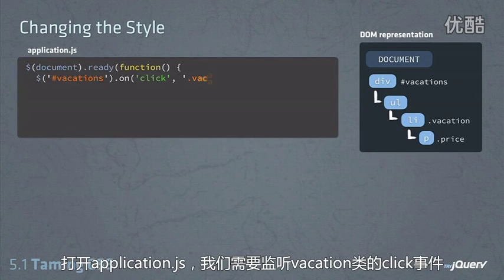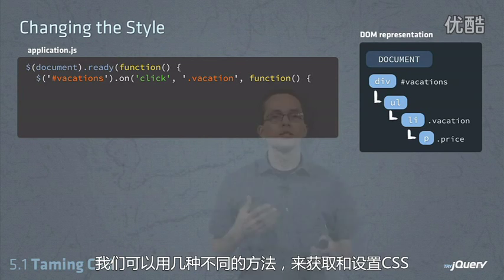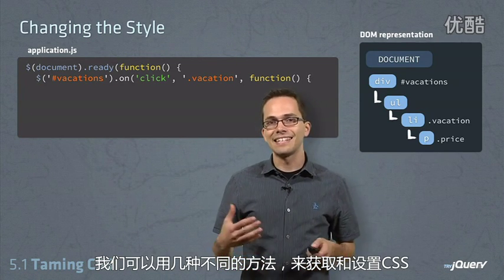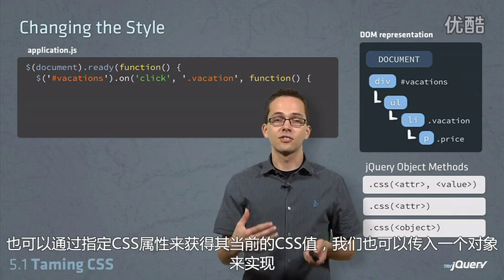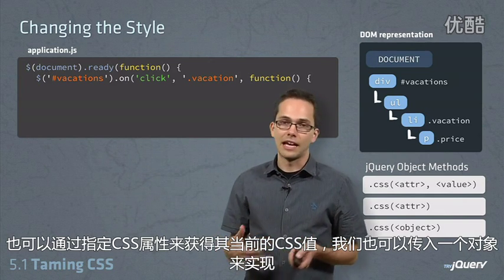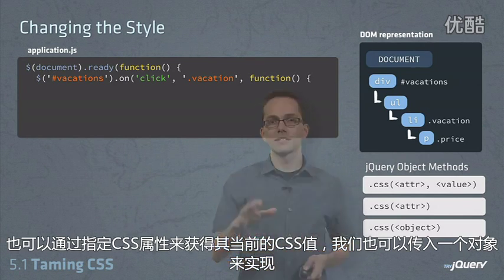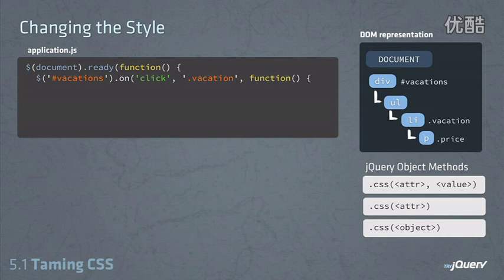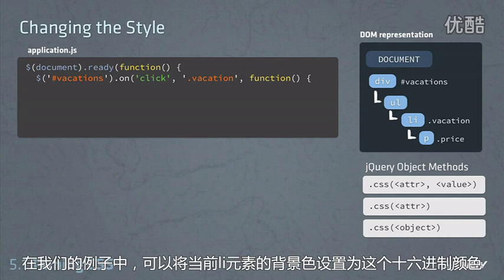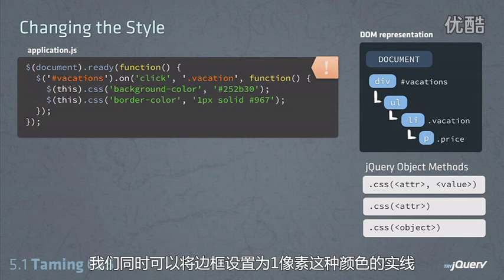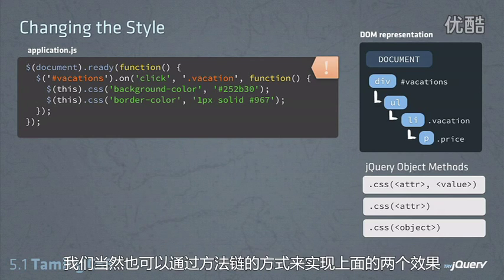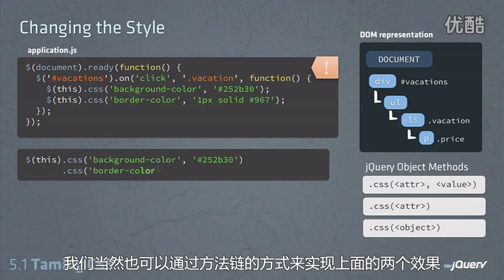Here we are inside of our application.js, and we're listening for click events on the vacation class. There are a few different methods we can use to get and set the CSS. We can set it by specifying the attribute and a value. We can get its current value by specifying the attribute. And we can also send in an object. We could set the background color for this current li to a hex code, and also set the border to one pixel solid with a color. We could also do this in one line by method chaining these together.